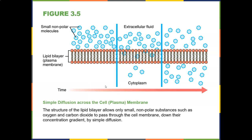Now let's talk about how molecules go inside and outside the cell. Simple diffusion across the cell membrane: the structure of the lipid bilayer allows only small nonpolar substances, such as oxygen and carbon dioxide, to pass through the cell membrane down their concentration gradient. Diffusion means moving from an area of high concentration to low concentration.